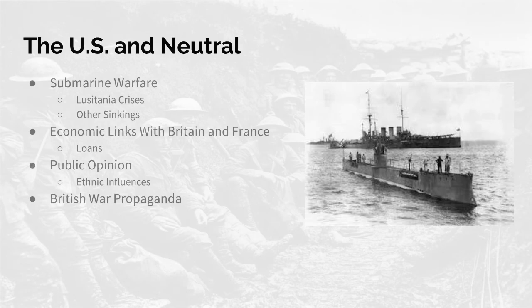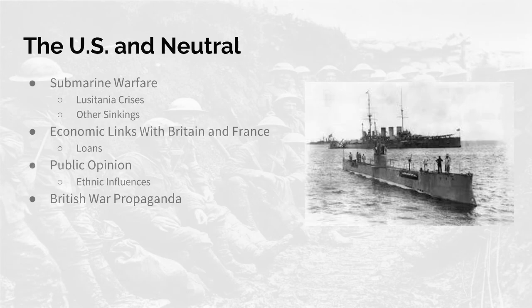One huge piece of warfare the U.S. came in contact with, even though not yet in the war, was submarine warfare. Submarines were not utilized much before World War I, but they were a huge weapon for the Germans. The British had a strong naval blockade set up in the North Sea and also seized ships passing by. The Germans similarly had a submarine blockade to protect their interests in what they called war zones in the English Isles.